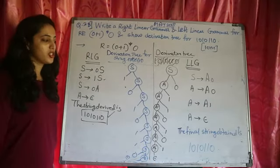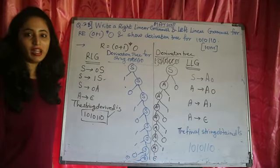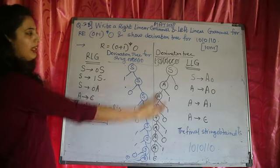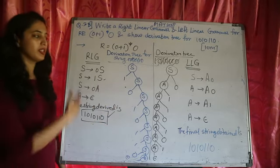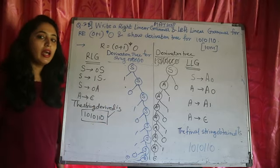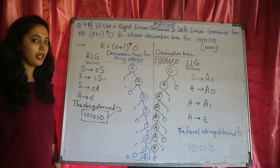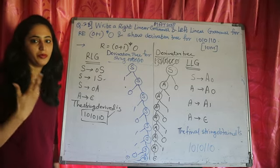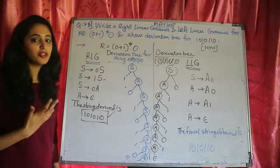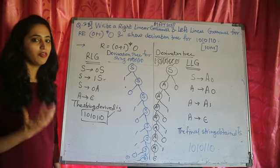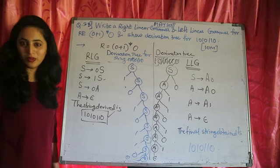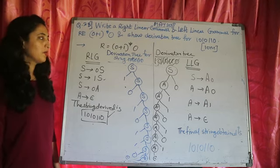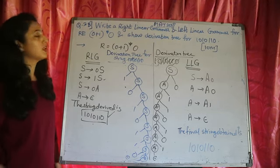I hope you all understood. This is really very easy. Don't miss out this question. If you get right linear grammar or left linear grammar, you can solve it the way I have explained. You just need to draw the DFA carefully and properly — your DFA should be correct. If it is wrong, the entire thing is going to be wrong. Thank you for watching.